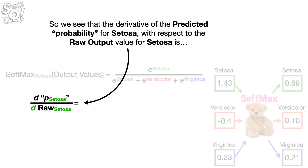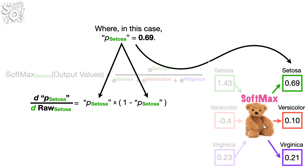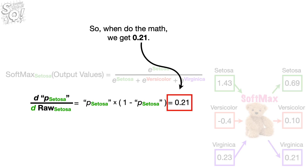Bam! Bam! So we see that the derivative of the predicted probability for Setosa with respect to the raw output value for Setosa is the predicted probability for Setosa times 1 minus the predicted probability for Setosa. In this case, the predicted probability for Setosa equals 0.69, so when we do the math, we get 0.21.